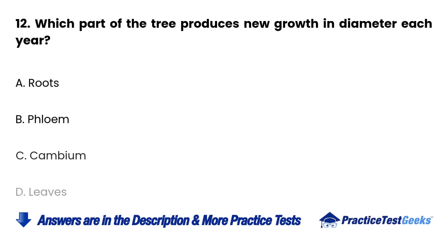Question 12: Which part of the tree produces new growth in diameter each year? a. Roots. b. Phloem. c. Cambium. d. Leaves.